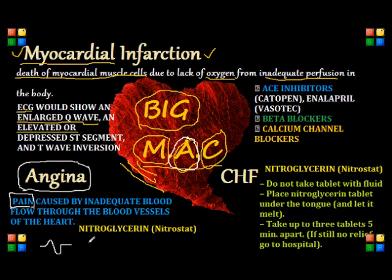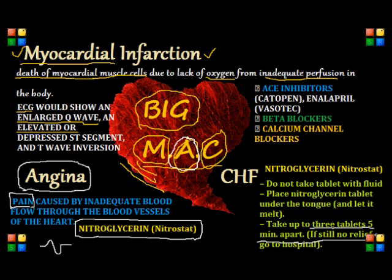The main medication for a patient with angina is usually nitroglycerin, in which the patient can take up to three tablets five minutes apart. If still no relief happens, we tell the patient to go to the hospital. We need to be mindful that we hold any nitrates if the blood pressure is less than 90 mmHg. We tell our patient to place the nitroglycerin tablet under the tongue and let it melt. We don't give the patient any fluid while taking the tablet.